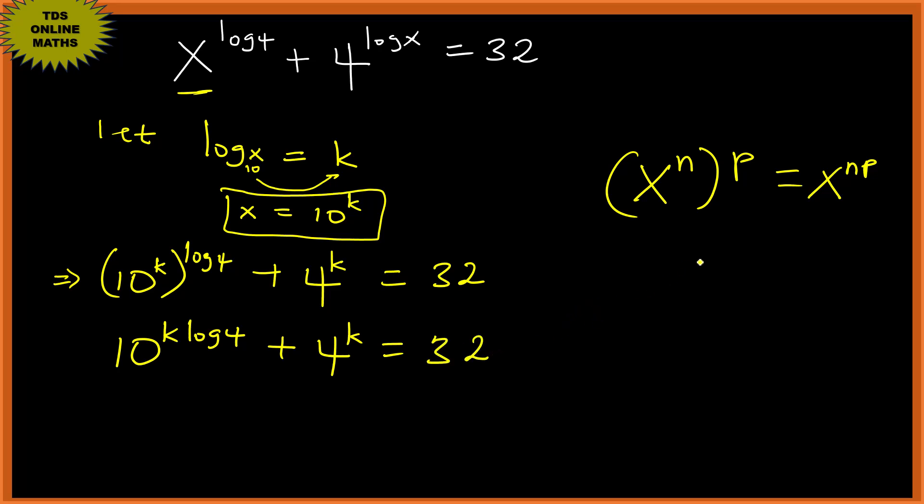Now let's observe something from the power rule of logarithms. n log a to base c is the same as log a to the power n to base c. So this is a power rule which will come here. So we have 10 raised to log 4 raised to k plus 4 to the power k equals 32.